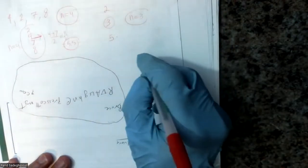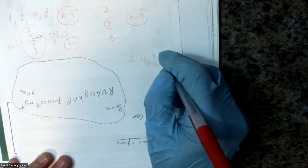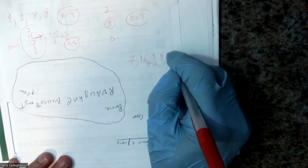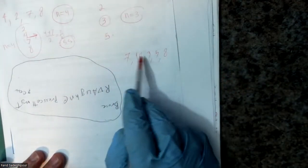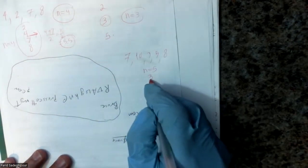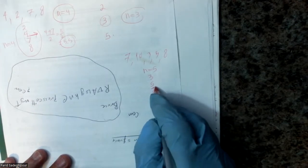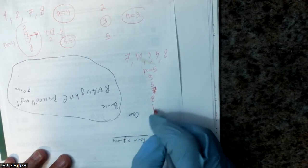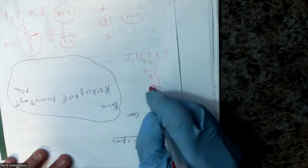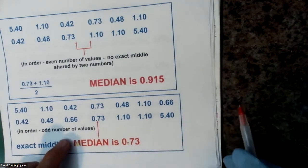If the numbers are odd — say 7, 10, 3, 5, 8 — you write them in order from smallest to largest. The number exactly in the middle is 7, so the median is 7. When n is odd, the median is simply the number exactly in the middle of the ordered data set.